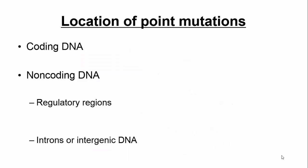Whenever we look at mutations, we always consider the question: if we're considering two mutations, which one's worse? All things being equal — obviously there's always exceptions, there's always variations to the rule — but all things being equal, which one is worse? So you could have mutations that are in the coding region of the DNA.